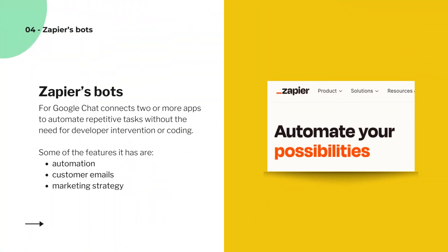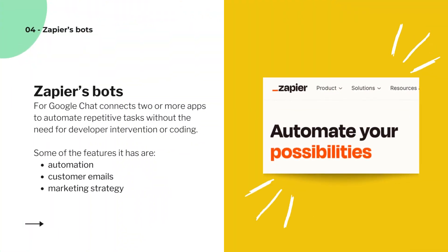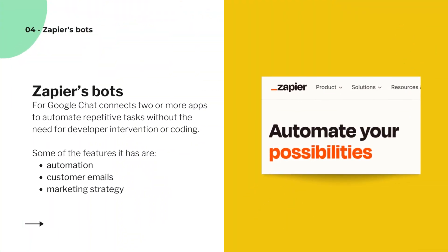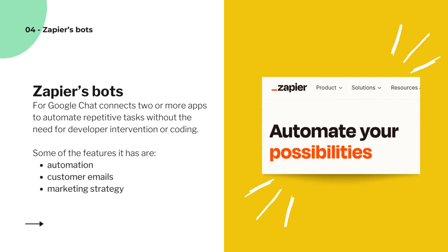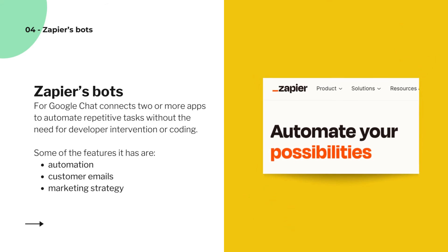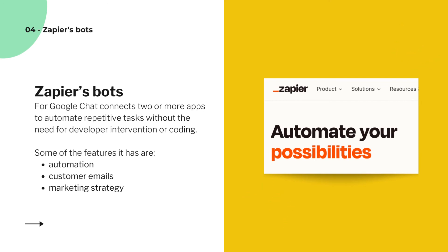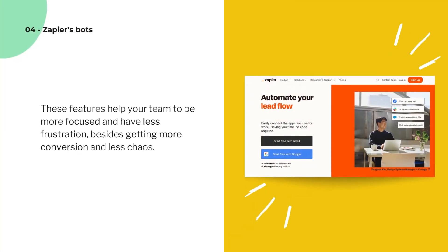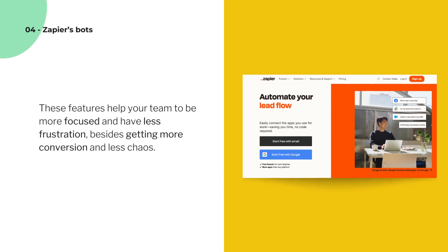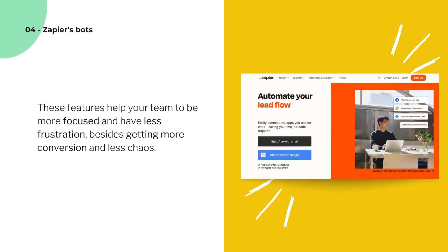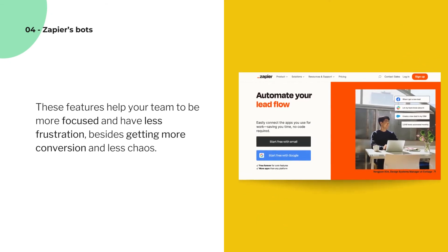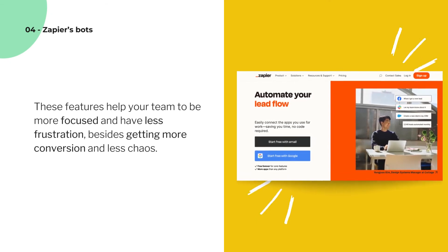Zapier's bots for Google Chat connects two or more apps to automate repetitive tasks without the need for developer intervention or coding. Some of the features it has are automation, customer emails, and marketing strategy. These features help your team to be more focused and have less frustration, besides getting more conversion and less chaos.